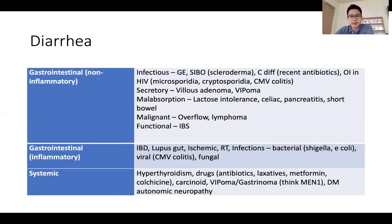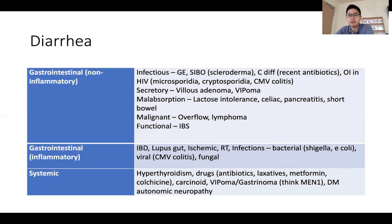Systemic causes are also important, especially in the cases station 5 exam — hyperthyroidism, drugs, carcinoid is something to think about, VIPoma and gastrinomas have been mentioned, and autonomic neuropathy from any underlying neurological disorder can also cause a diarrhea-like picture.